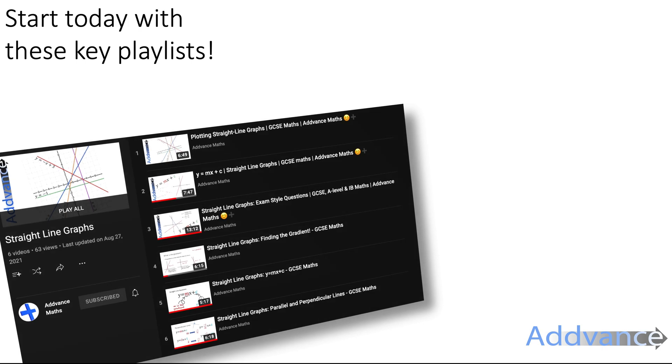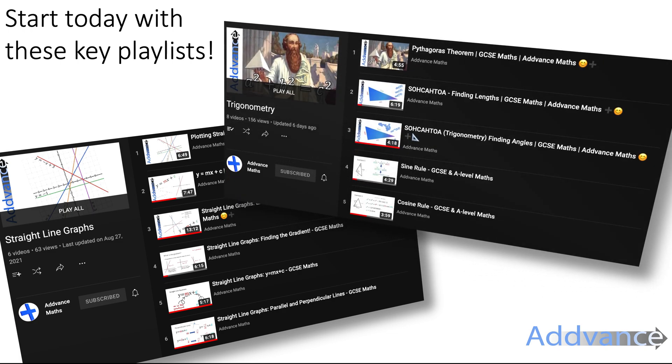If you want to start today these are the playlists I recommend. So my straight line graphs playlist covers everything you need to know in GCSE about straight line graphs. It's a really important topic for GCSE and for A-Level and IB after that so it's really important you understand that and I also recommend trigonometry as well. So that's covering everything from Pythagoras and SOHCAHTOA and things like sine and cosine rule as well. Those are fantastic playlists to start on today to get you started on your GCSE revision.